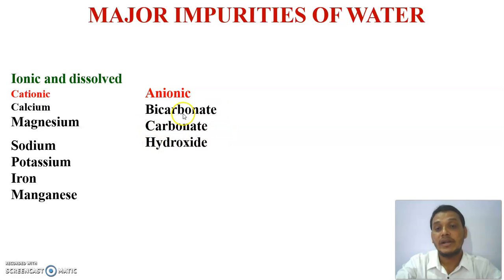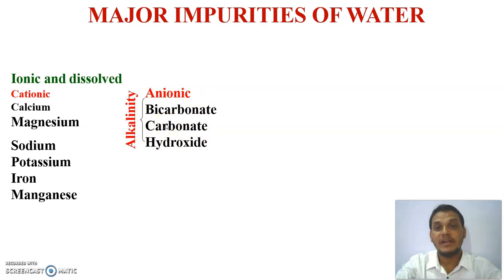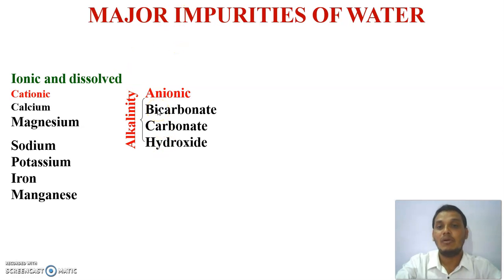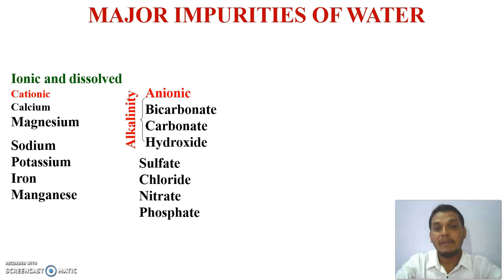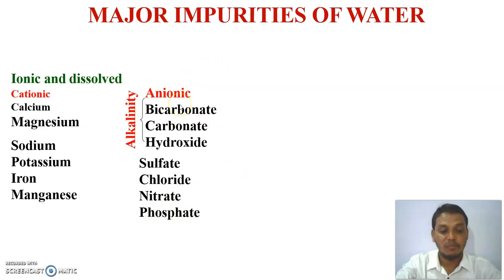Due to the presence of bicarbonate, carbonate, and hydroxide, water becomes alkaline in nature. Alkalinity is due to the presence of hydroxide, carbonate, and bicarbonate, making the water an alkaline water sample. The anionic impurities also include sulphate, chloride, nitrate, and phosphate.